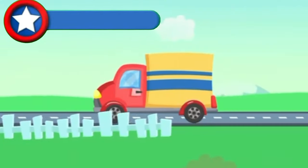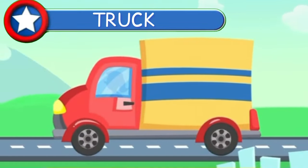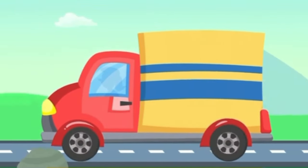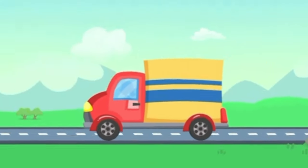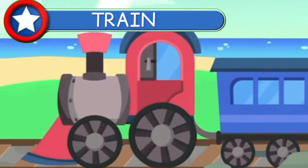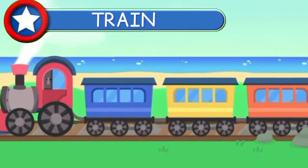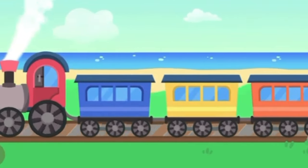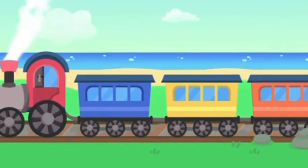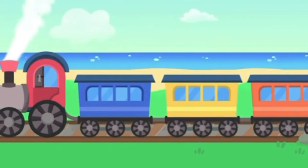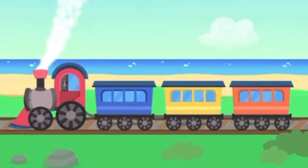This is a truck. Trucks are used for covering long distances and they carry heavy loads. This is a train. The train carries people over long distances. It is pulled by a locomotive and connected with wagons. It needs tracks to ride and pick up speed. It can go really fast.